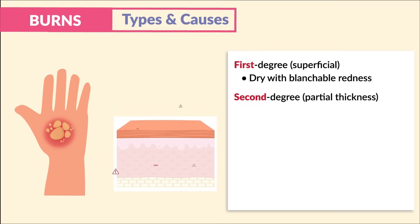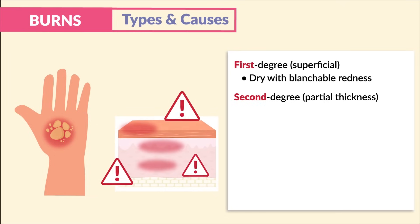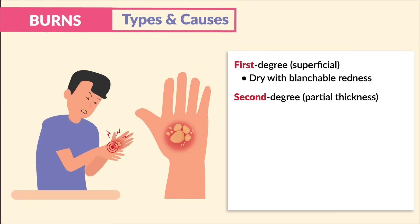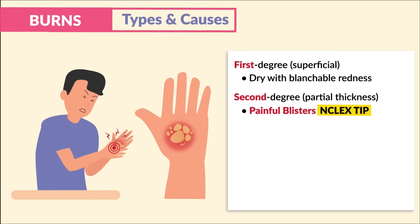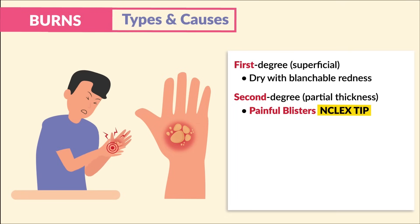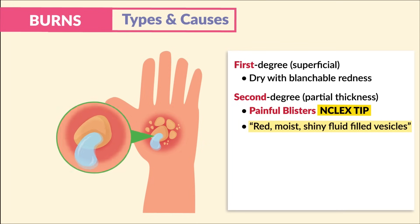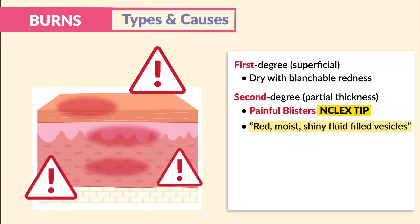Second degree burns are called partial thickness burns. Both the epidermis and dermis are damaged. The key sign to know is painful blisters — huge NCLEX tip. Write down these key words: red, moist, and shiny fluid-filled vesicles, or basically blisters, that often leak fluid. Just think two layers of skin for second degree burns.